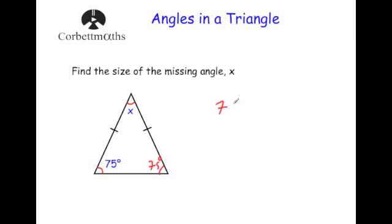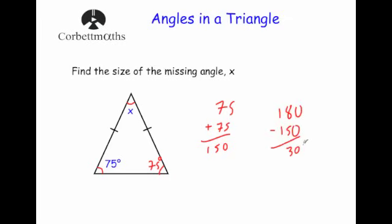So we're going to add together the two known angles: 75 plus 75 is 150 degrees. Then we take that away from 180 to see what's left: 180 minus 150 leaves 30 degrees. So the angle at the top, X, equals 30 degrees. We can check: 75 plus 75 is 150, plus 30 is 180. Correct.